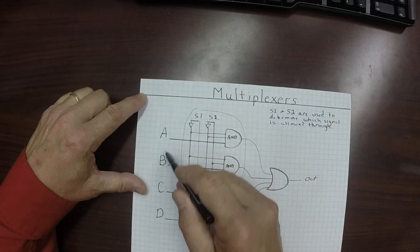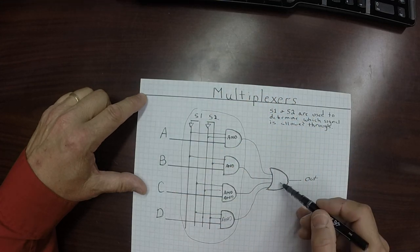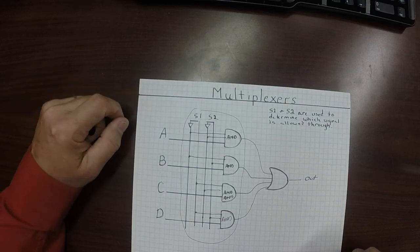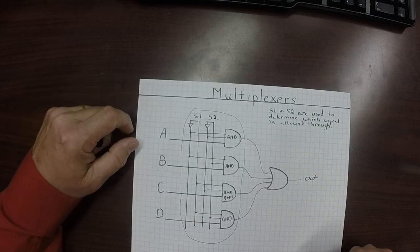And by adding the input signals and a common OR gate, we make it a multiplexer. And that's multiplexers in a very short little demonstration.